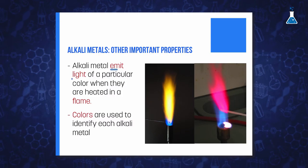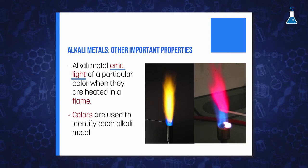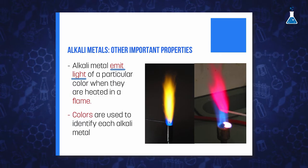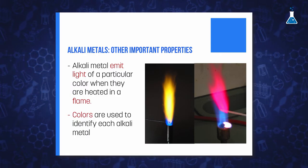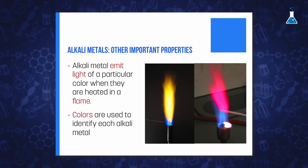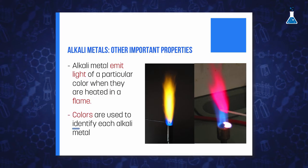Lithium, for example, has a density of only half the density of water. One important characteristic of alkali metals is that each of them emits light of a particular color when the metal or a compound containing the metal is heated in a flame. These colors are so characteristic of each element that flame tests are commonly used for the identification of alkali metals.